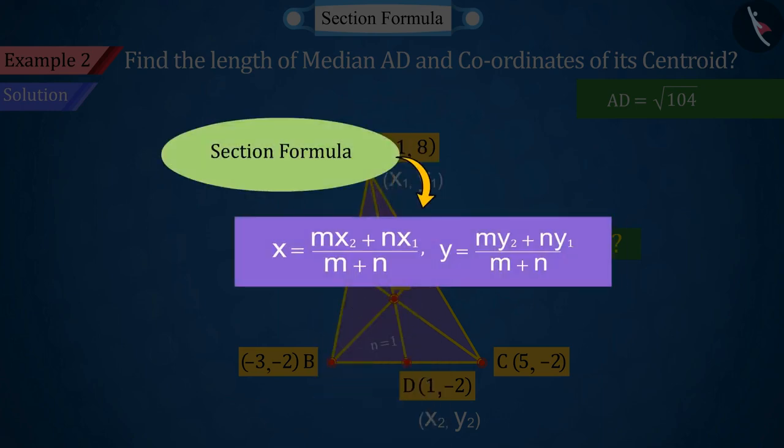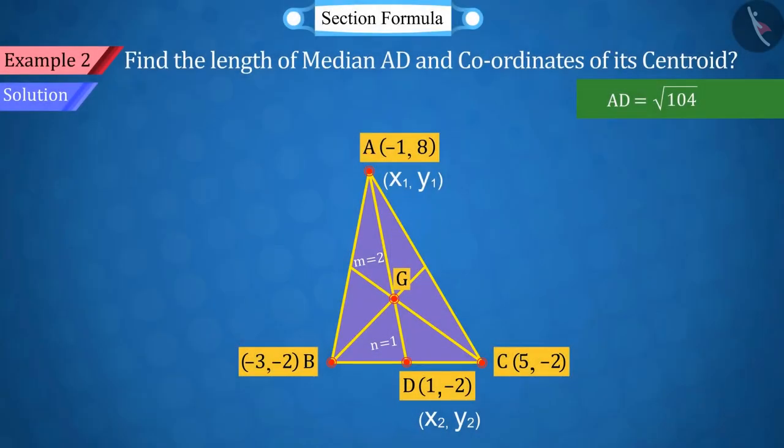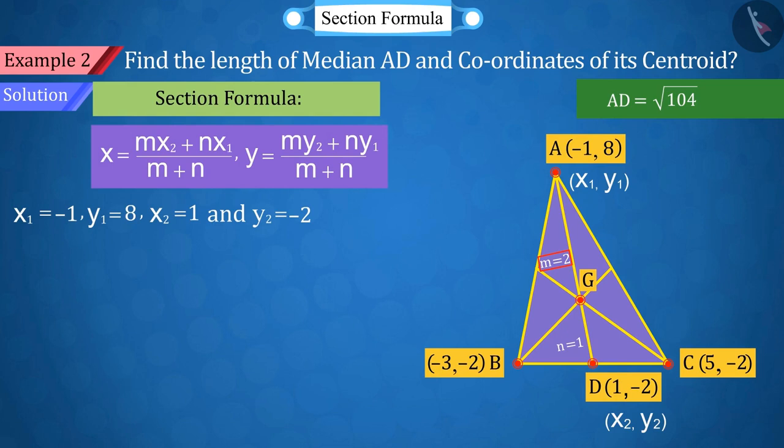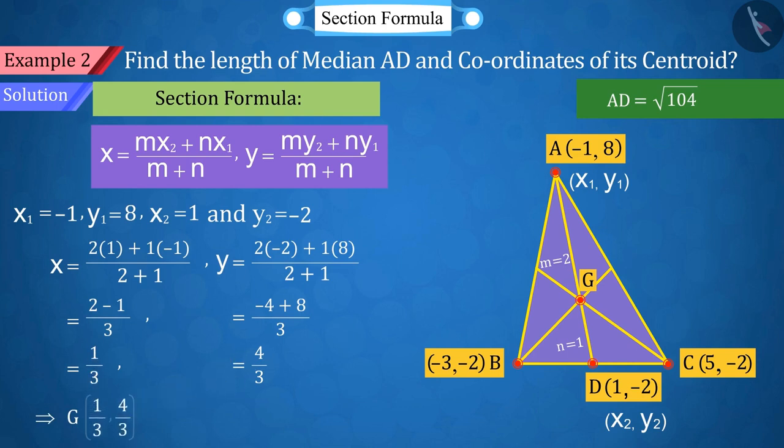Absolutely correct. For this, we will use the section formula. Where the coordinates of point A are x1 equals -1, y1 equals 8, and point D are x2 equals 1, y2 equals -2. From M, N, x1, y1, x2, and y2, put the values in the section formula. On solving, the coordinates of point G, we get 0.33 and 1.33.